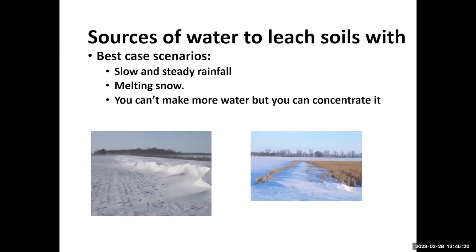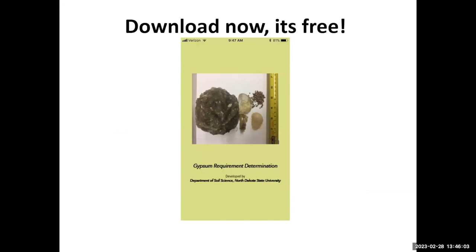Where do we get enough water for leaching? Slow and steady rainfall is ideal; spring rains are phenomenal. Melting snow is something we need to think more about, not only for reclamation but also restoration. You can't make more water, but you can concentrate it. A snow fence can concentrate three to four feet of snow water, which can then be used for infiltration later on.